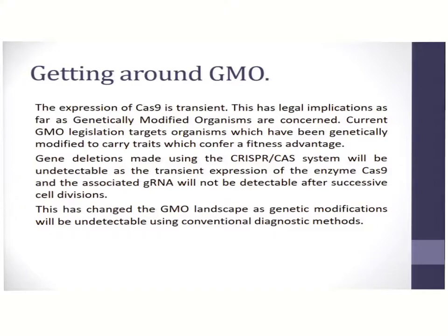One of the applications of Cas9 is in genetically modified organisms. Since Cas9 creates deletions and can engineer insertions without the use of the cauliflower mosaic virus promoter as in plants, detection using genetic modification diagnostic techniques is difficult, as individual genes may not be modified substantially compared to the parent organism.